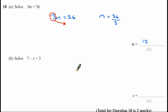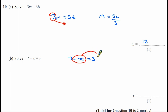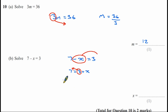Part B: solve 7 minus X equals 3. Because it's a minus X, move the X to the other side first: 7 equals 3 plus X. Then move the 3 — currently a plus, it becomes a minus on the other side: 7 minus 3 equals X. Therefore X equals 4.